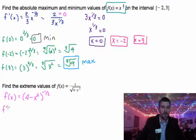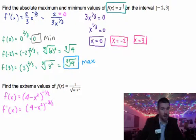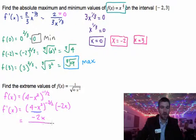And so the derivative of that is going to be 4 minus x squared to the negative 3/2 times the derivative on the inside. So here's chain rule right here. So we have to multiply by that, and that's going to give us negative 2x.